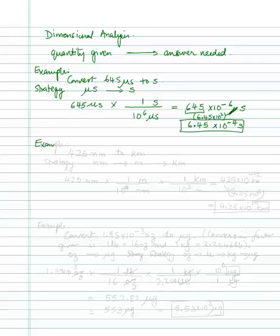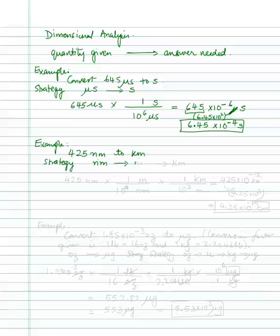Let's take another example. We will convert 425 nanometers to kilometers. You're converting nanometers to kilometers, which is really going from ten to the negative nine to ten to the power of three. The best thing to do in these cases is to form a strategy where you come to the base unit first and then convert to the next one. You can go directly, but I'd advise not to. So our strategy will be to convert nanometers to meters, and then from there go to kilometers.